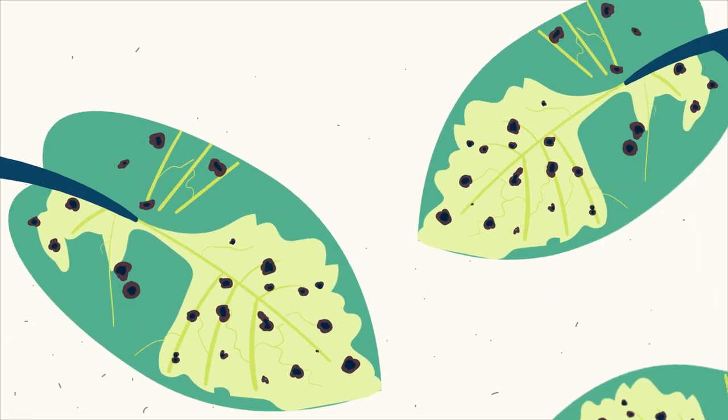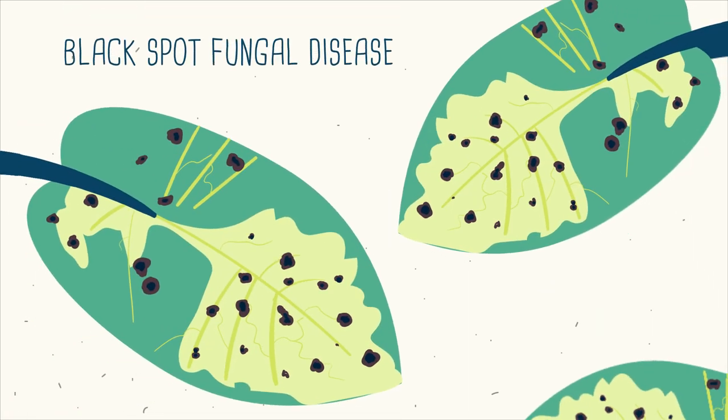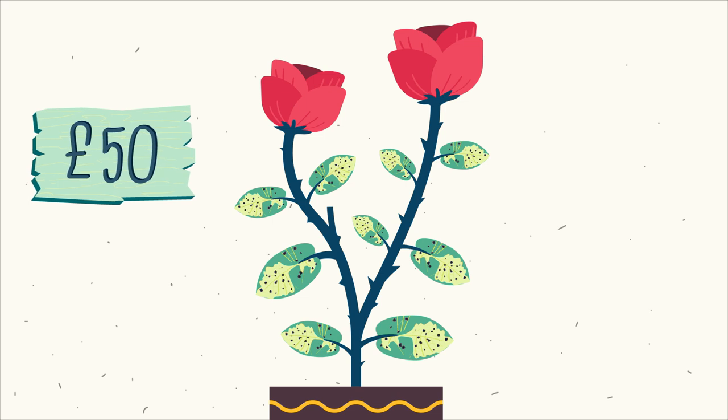An example of fungal infection in plants is black spot fungal disease. It can infect any plant with fleshy leaves, and it's really common in roses. This is a big problem for ornamental growers, where looks are everything; a spotty plant can affect its value.